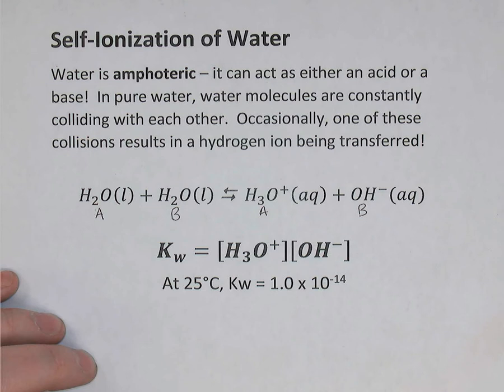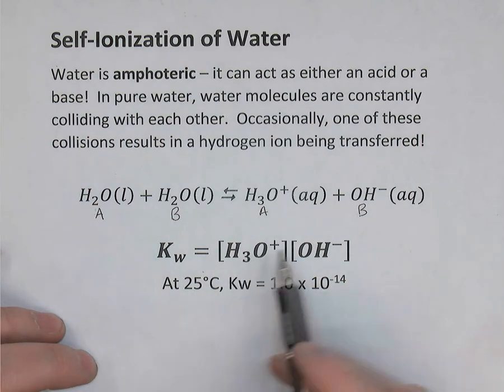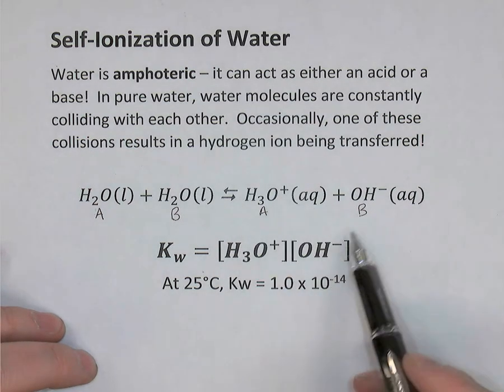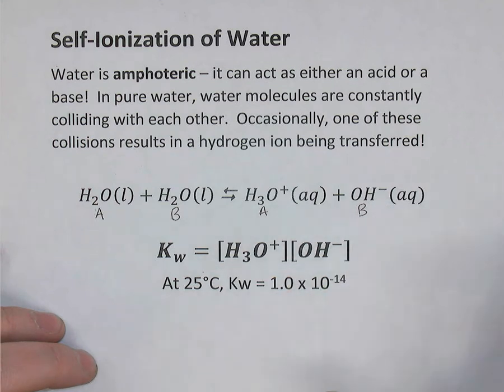Now if you think about the equilibrium expression for this reaction, we know that we omit liquids and solids from equilibrium expressions. So this reaction's equilibrium expression is simply KW. We're going to give it a special subscript. So in our equilibrium unit, we just said KC. For acids, we say KA. But for this self-ionization of water reaction, we're going to say KW, the W for water. It's going to equal the concentration of hydronium times the concentration of hydroxide. And that's it. Because the reactants are liquids, we leave them out of the expression.